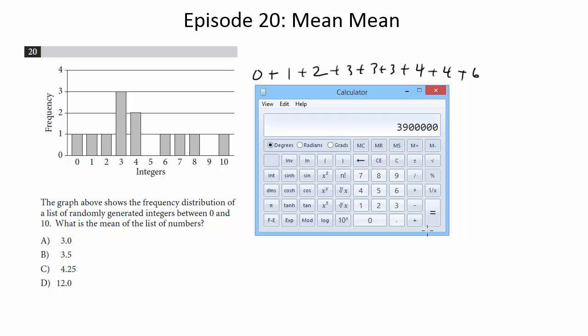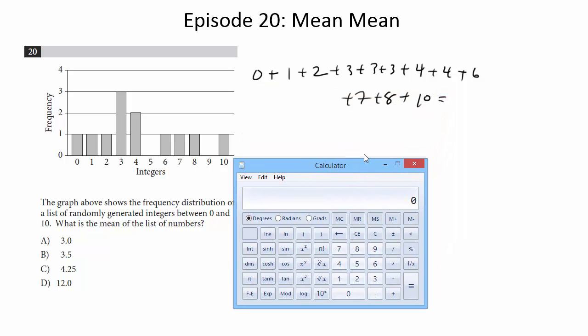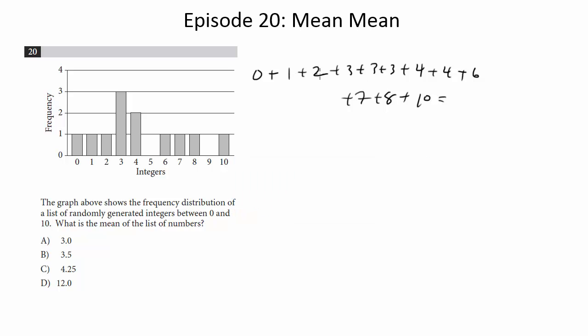So now we'll go ahead and add all these up. 1 plus 2 plus 3 is 6. Then 1, 3, 6, 9, 12, 16, 20, 26, 33, 41, 51. So if I did that right...